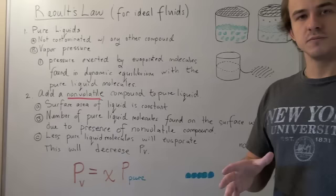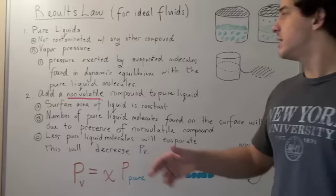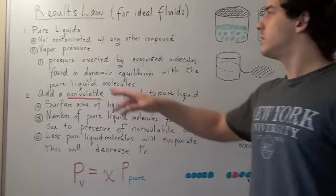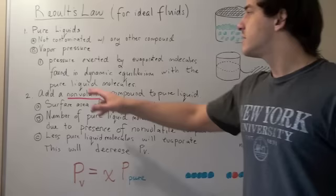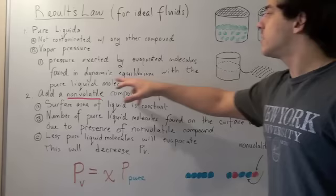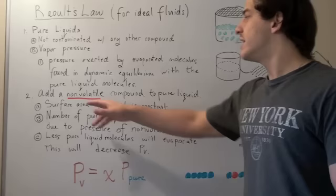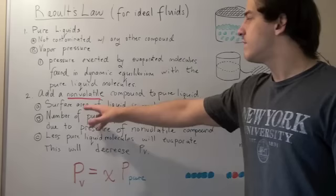Now what will happen to our system if it's left untouched? Well eventually, some of the water molecules found on the surface of the liquid will escape into the gas state and become gas molecules — and this is called evaporation. Now when the rates of evaporation and condensation are equal, the system is said to be in dynamic equilibrium. At this point, we could measure something called vapor pressure. Vapor pressure is the pressure exerted by evaporated molecules or gas molecules found in dynamic equilibrium with the pure liquid molecules.